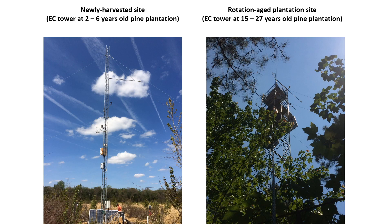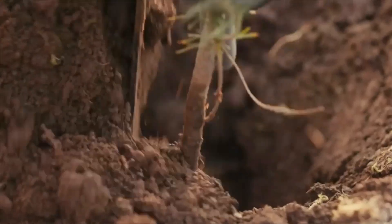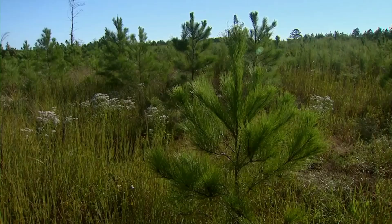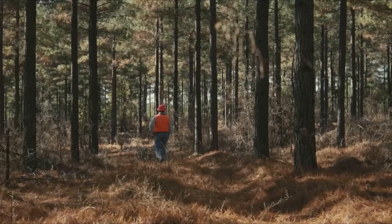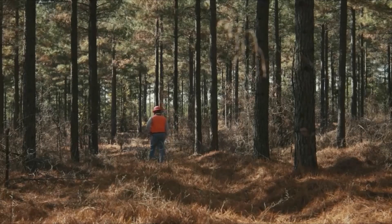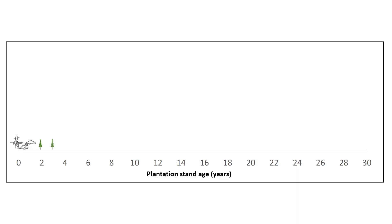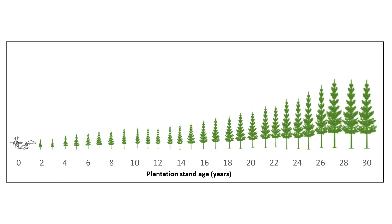To answer these, we used two eddy covariance flux towers using the plantation sites of Weyerhaeuser Company in Plymouth, North Carolina. These sites transitioned from newly harvested sites and were planted with two-year-old pine seedlings, containing pines from two to six years old. Another is a rotation-aged pine plantation ranging from 15 to 27 years old. Rotation-aged means the age at which the plantation is mature enough to be harvested, which is usually 25 to 30 years for loblolly pine.